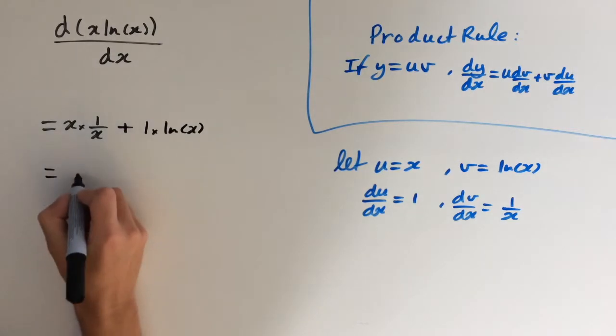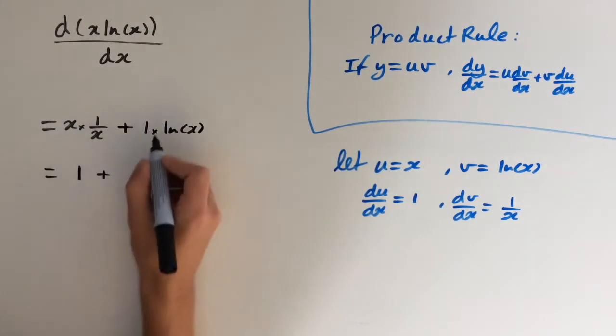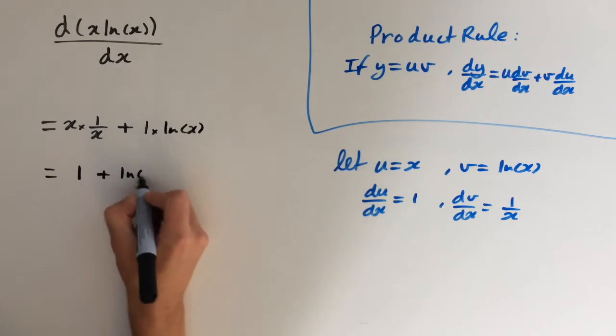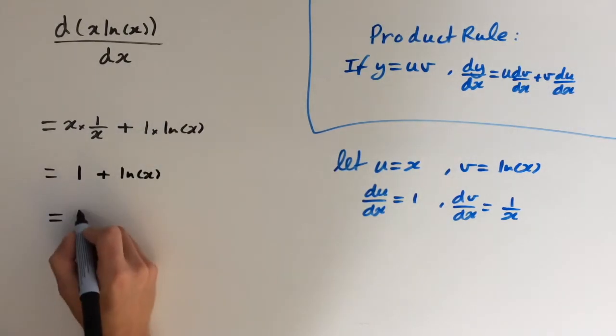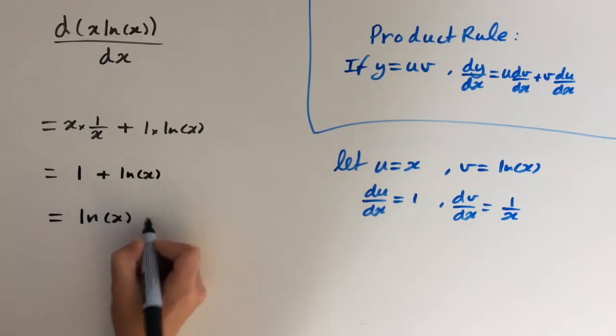So x cancels out, this will give us 1 plus ln of x. So let me just rearrange this, this gives us ln of x plus 1.